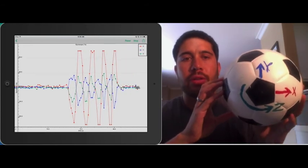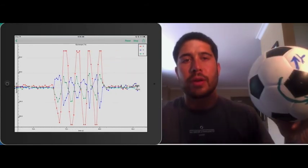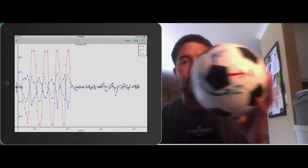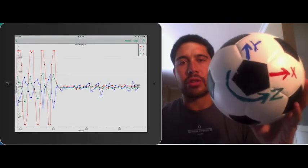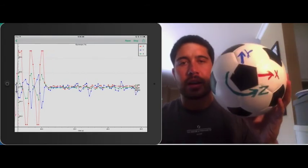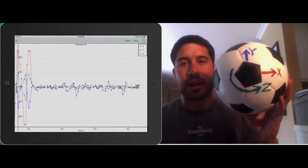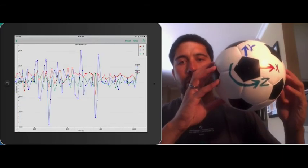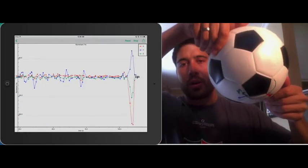And if you notice that if I just purely translate the ball, there's really not much signal from the gyroscope. And that's what we expect. We do see a little bit because my hand's not perfectly steady. But the gyroscope is really measuring when the ball starts to rotate.